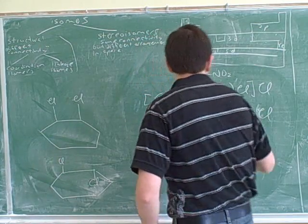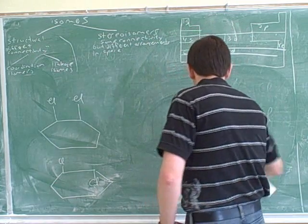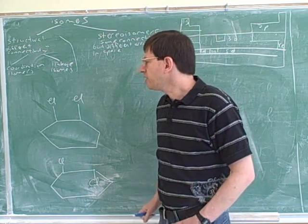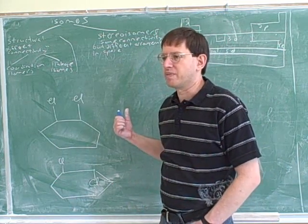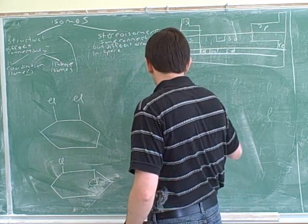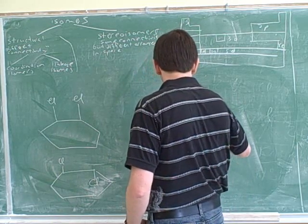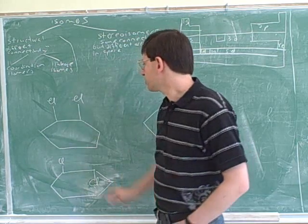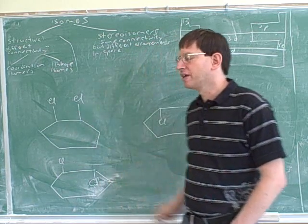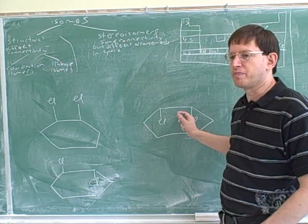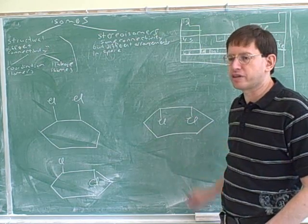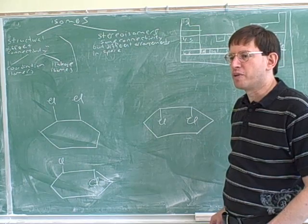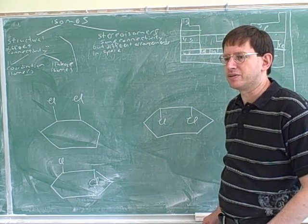All right, now the difficult part here is how can you tell whether two molecules are the same or not? For example, here's a ring where two chlorides are pointing above the ring and here's a ring where the two chlorides are pointing below the ring. So these pictures look different, but are they the same molecule or different molecules?